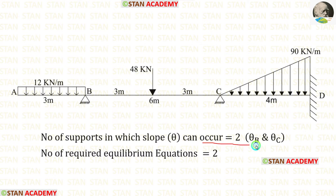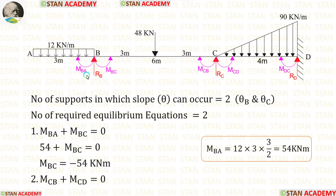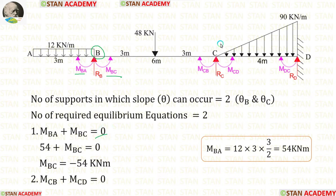If we calculate these two unknowns, we can easily find the final moments. To calculate these two unknowns, we need two equilibrium equations. The equilibrium equations can be made at the joints. In joint B, when we add the moments MBA and MBC, it will be 0. In joint C also, when we add the moments MCB and MCD, it will be 0.